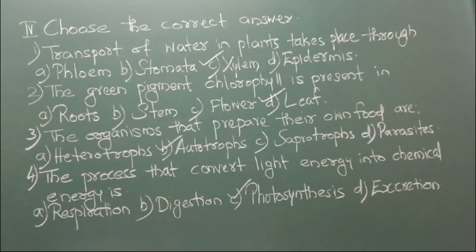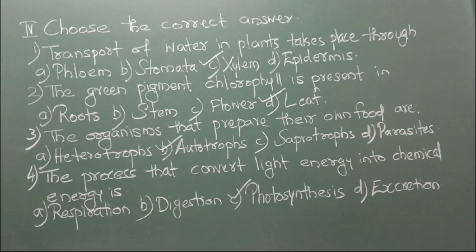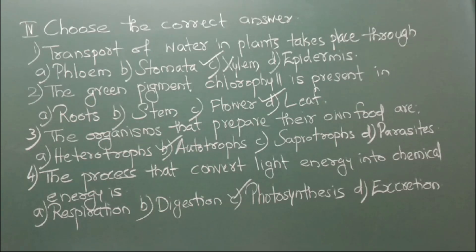Let's see choose the correct answer. Number 1: Transport of water in plants takes place through A. Phloem, B. Stomata, C. Xylem, D. Epidermis. The correct answer is xylem. Number 2: The green pigment chlorophyll is present in A. Roots, B. Stem, C. Flower, D. Leaf. The correct answer is leaf.